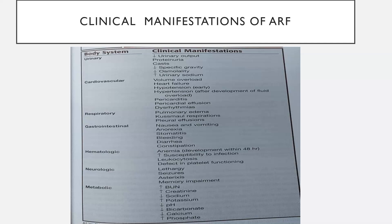The clinical manifestations of acute renal failure in the urinary system include decreased urine output, proteinuria, casts, decreased specific gravity, decreased osmolality, and increased urinary sodium. Cardiovascular manifestations include volume overload, heart failure, hypertension in the early phase and after development of fluid overload, pericarditis, pericardial effusion, and dysarrhythmias.